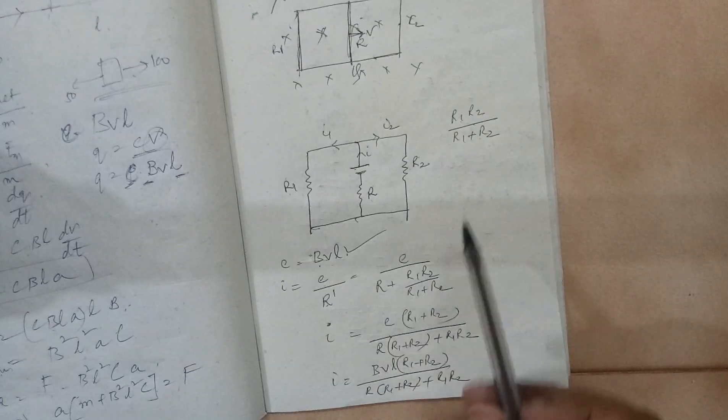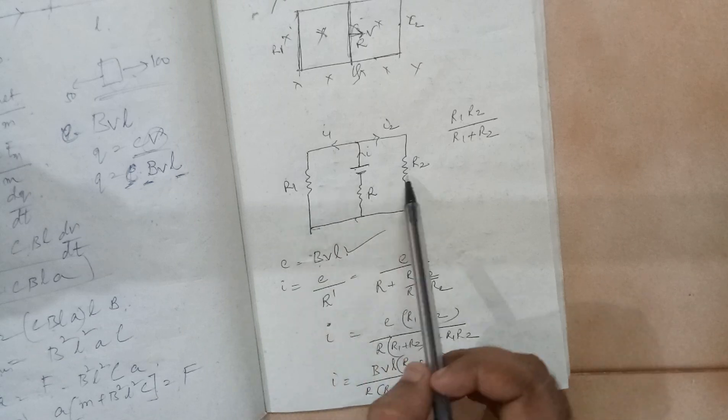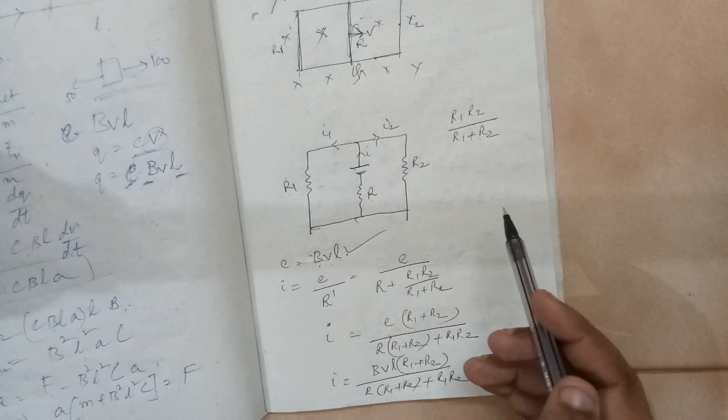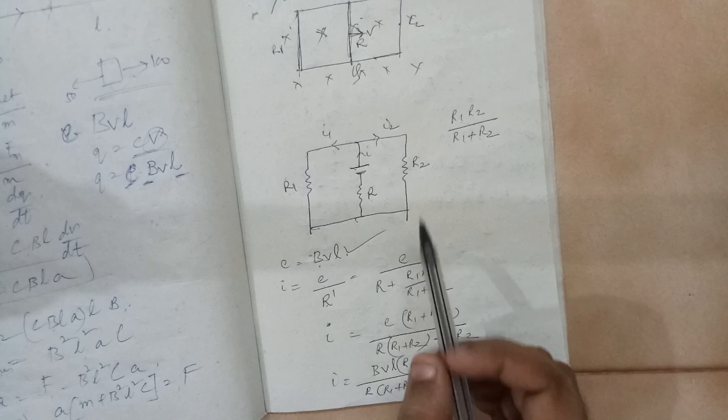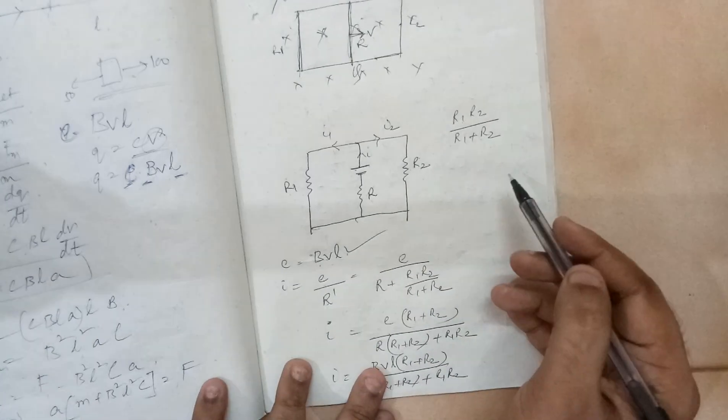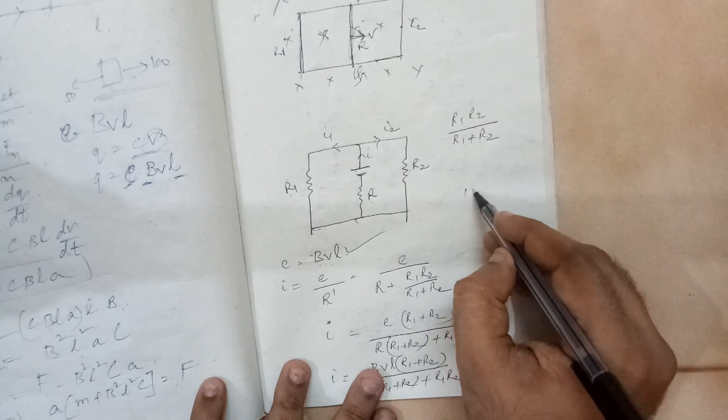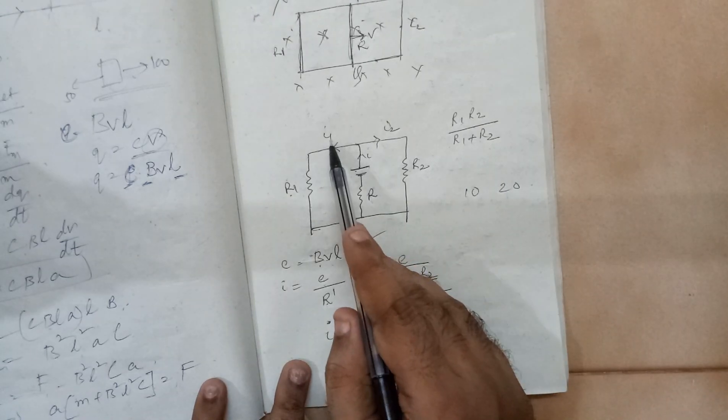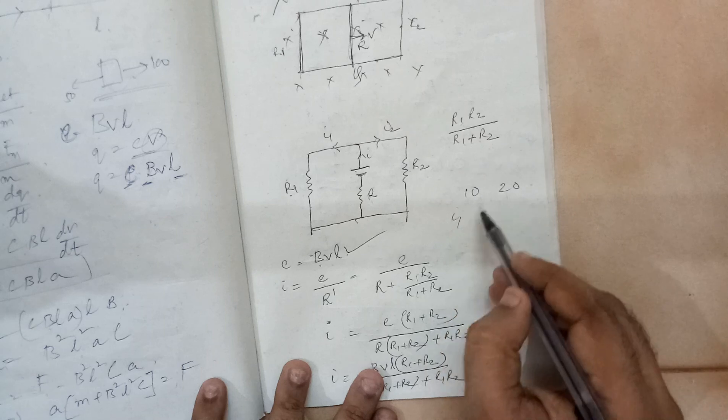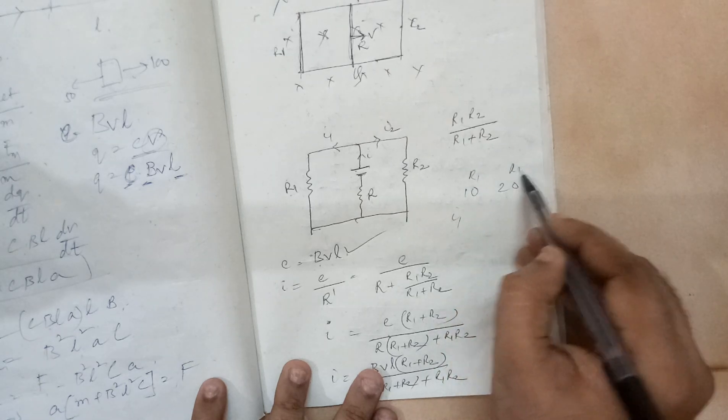Now observe here, these two are in parallel. So in their inverse ratio, the current will be distributed. What do I mean by that? If this R1 and R2 are 10 and 20, how much will be I1? This is R1, let us say, this is R2.